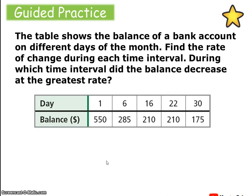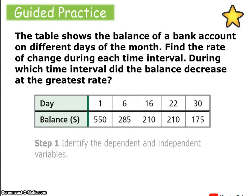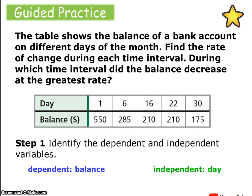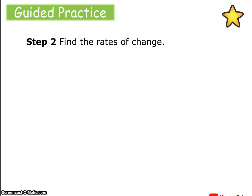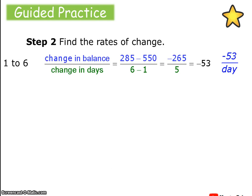Now you try. The table below shows the balance of a bank account on different days of the month. Find the rate of change during each time interval and determine during which time interval the balance decreased at the greatest rate. The independent variable is the day and the dependent variable is the balance. From day one to day six, that's a change of five days, and the balance went from 550 to 285 — a decrease of negative 265 over five, which is negative $53 per day.